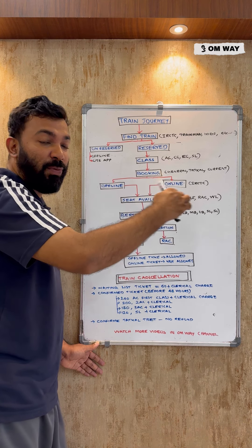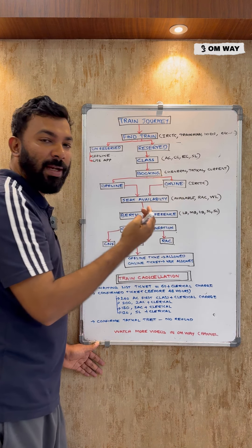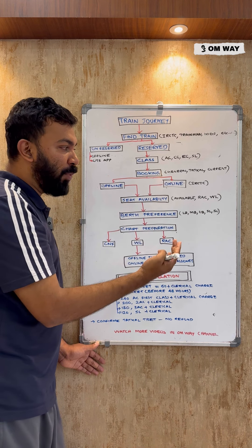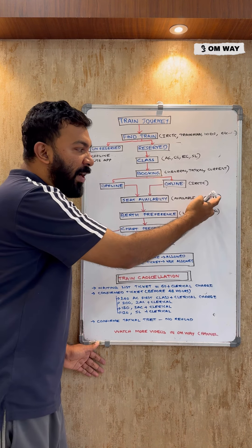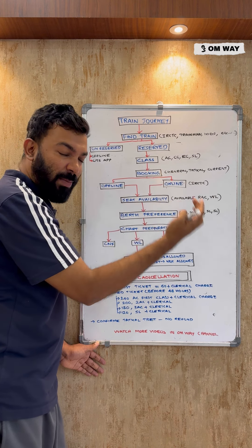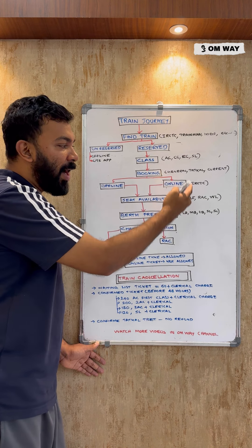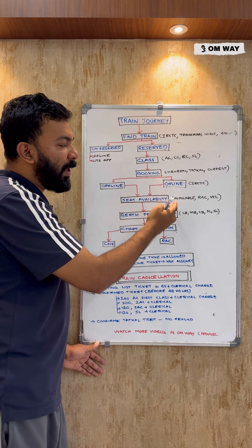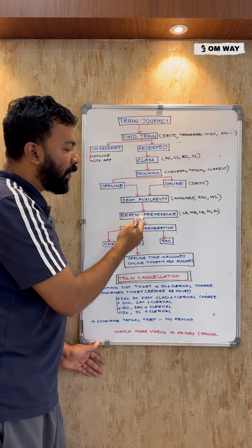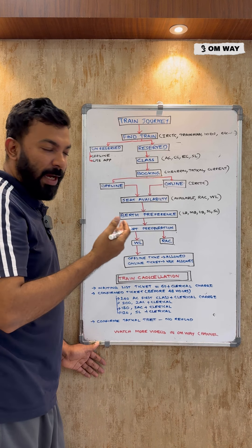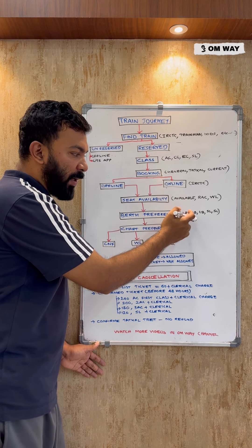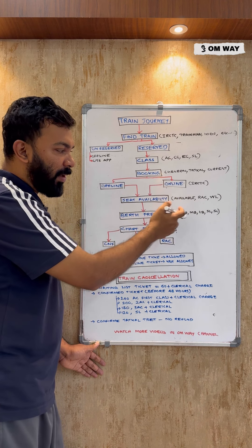If seats are available, you may also find RAC — Reservation Against Cancellation. There are also various waiting lists: GNWL, PQWL, and RLWL. You can also set a berth preference: side upper, side lower, lower, middle, or upper.